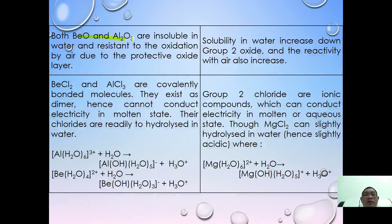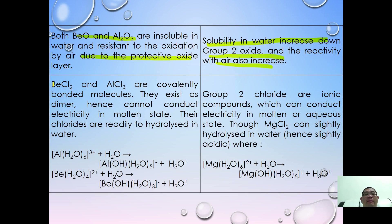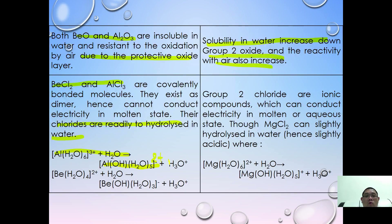Both beryllium oxide and aluminium oxide are insoluble in water due to their protective oxide layers; however, the solubility of group 2 oxides in water increases going down the group. Beryllium chloride and aluminium chloride are covalent compounds that hydrolyze readily in water. Hexaaquaaluminium ions hydrolyze to form [Al(OH)(H₂O)₅]²⁺, and tetraaquaberyllium ions hydrolyze to form [Be(OH)(H₂O)₃]⁺, both producing acidic solutions.